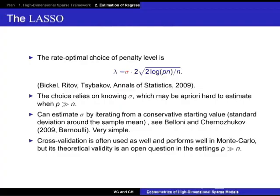We have worked on this in a number of settings. One way to estimate sigma is by iteration: start with a conservative value, get the initial penalty level, get initial lasso estimates, then re-estimate sigma as the standard deviation of residuals, and keep iterating. This simple procedure has been proven to have rate-optimal properties. Another approach is cross-validation, which performs quite well in computational experiments. Unfortunately, there is no proof yet that this method is consistent — so the theoretical validity is a nice open question, and could be a nice paper to write.